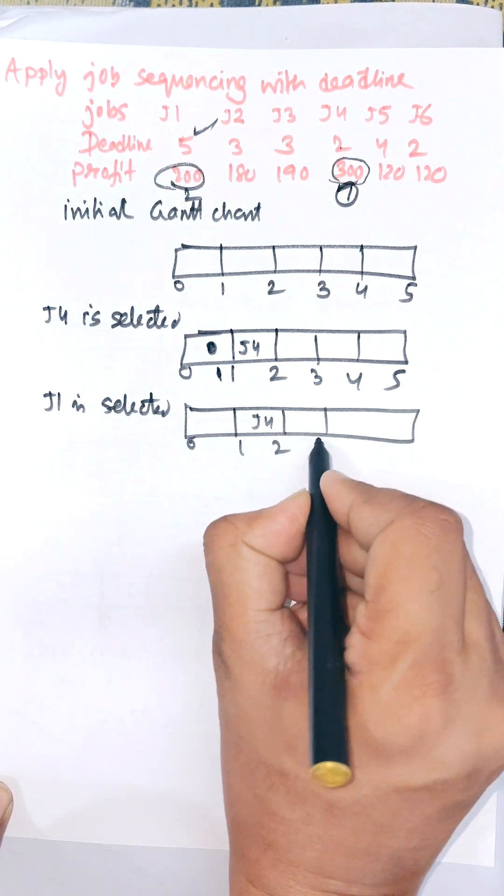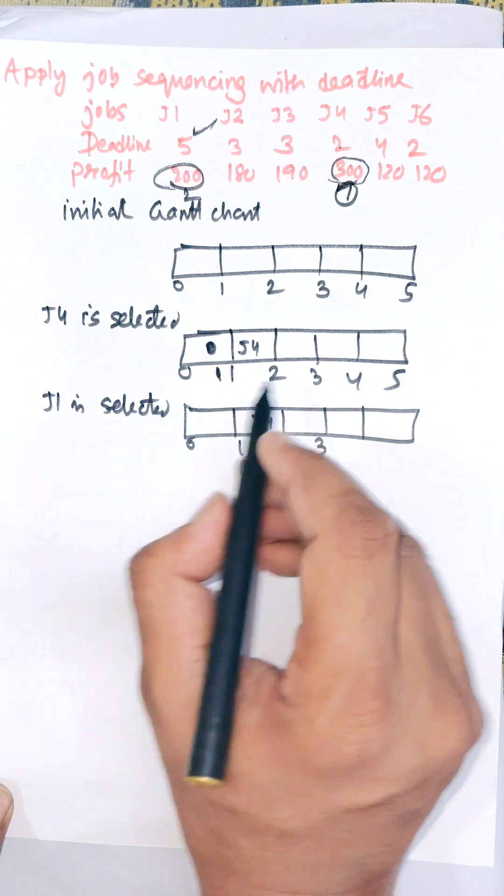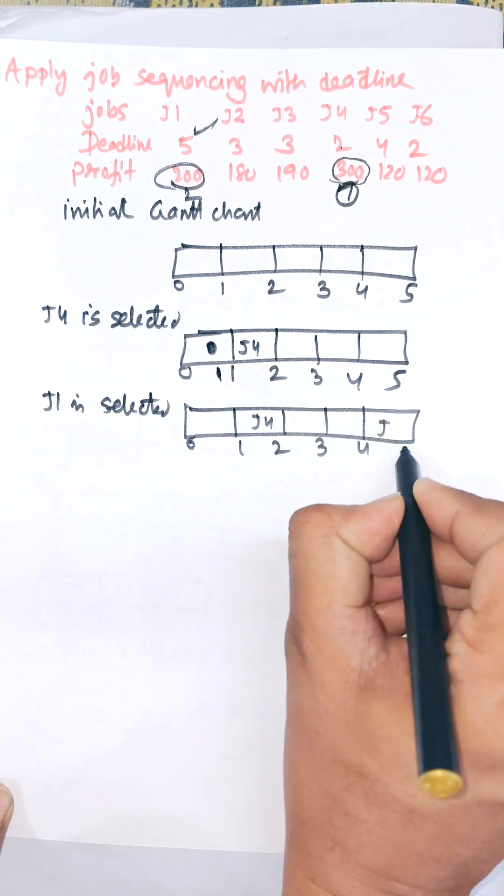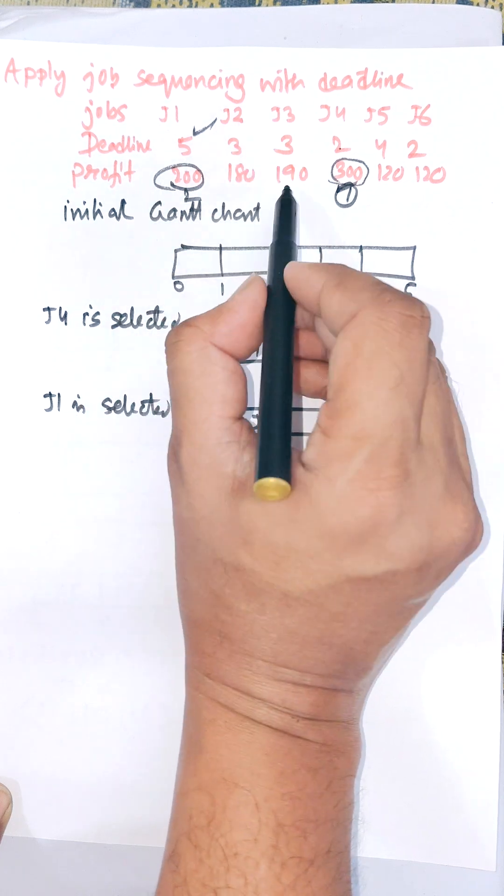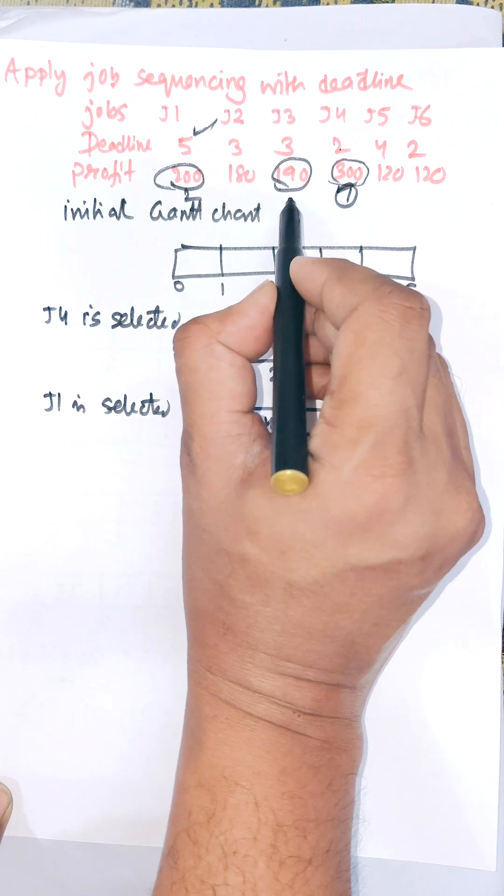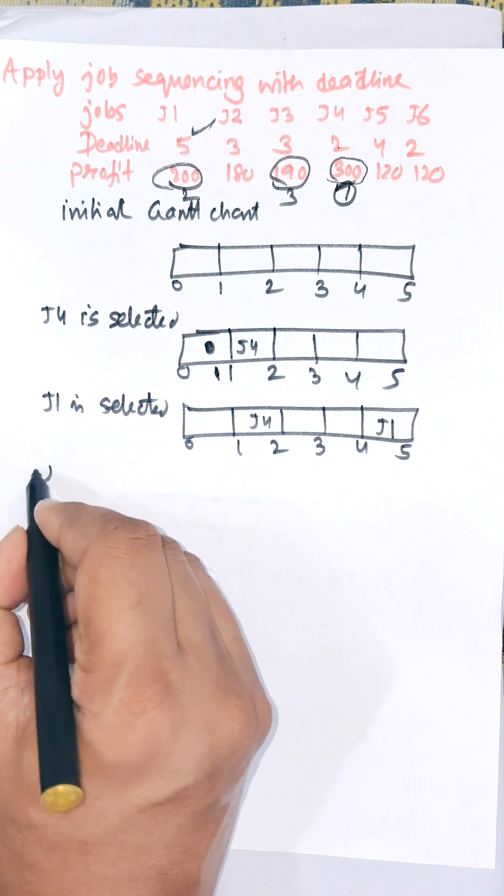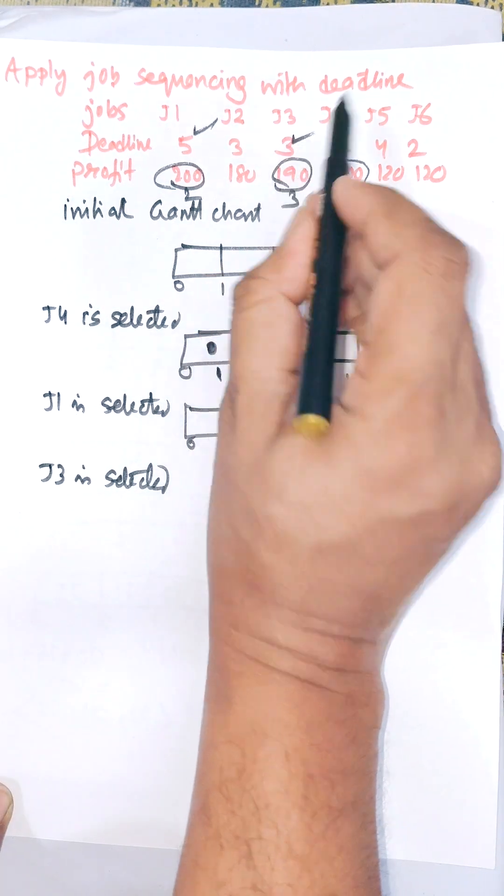Next, next maximum deadline is 190, so that is J3 is selected and deadline is 3. So in between 2 and 3, J3 will be allocated.